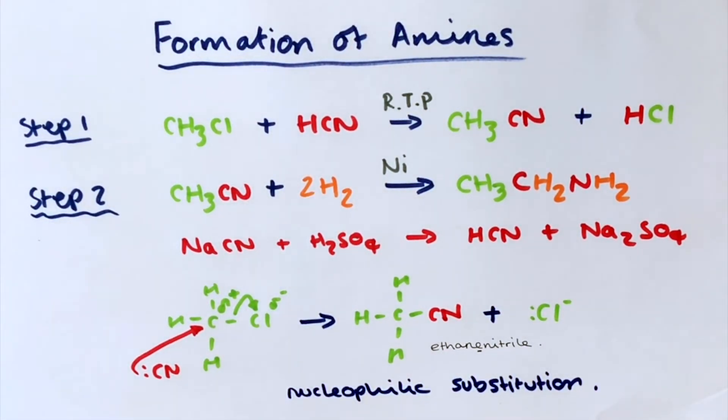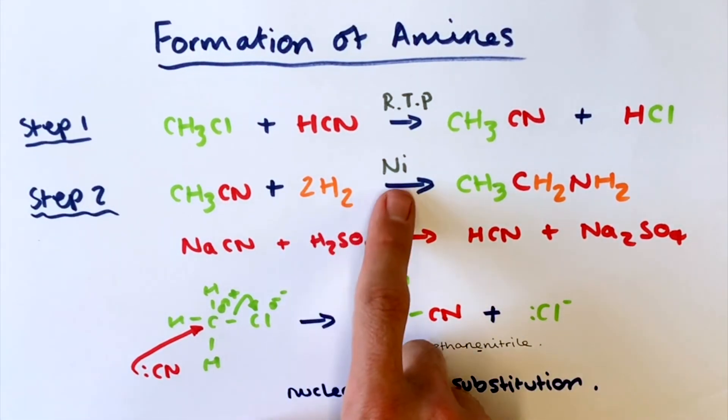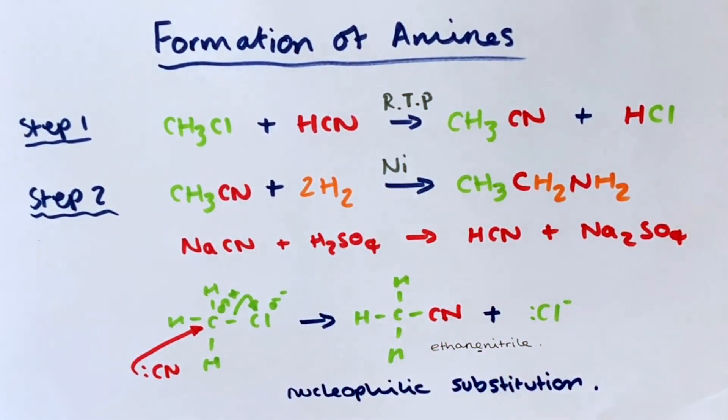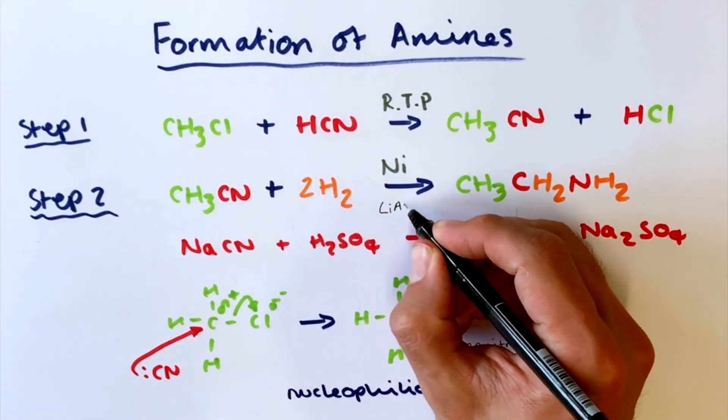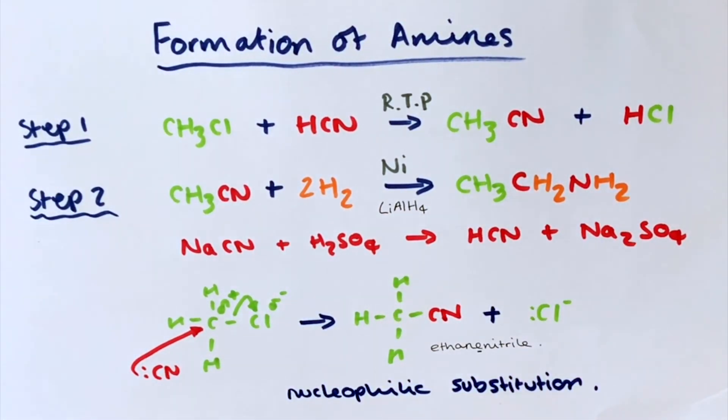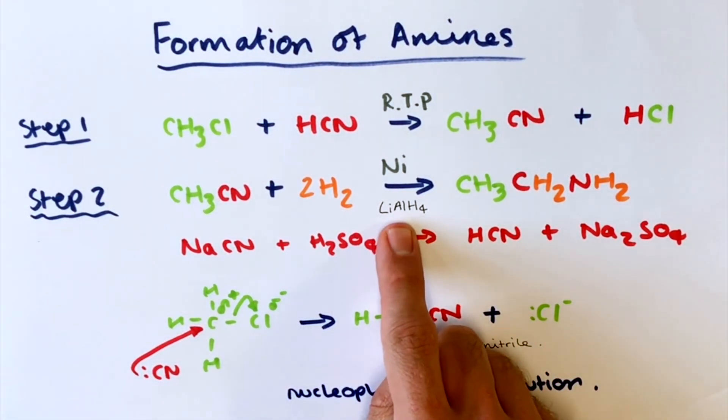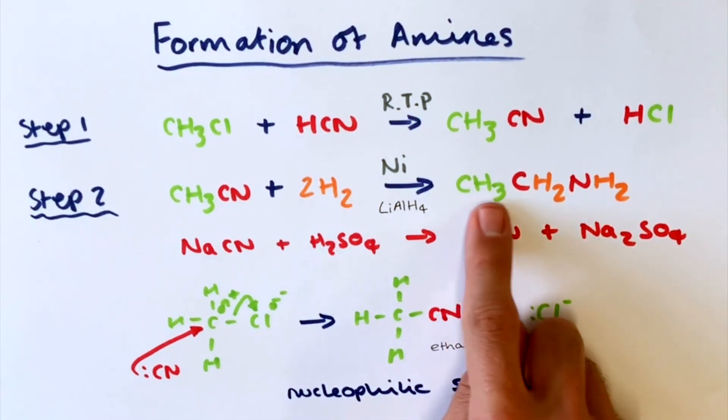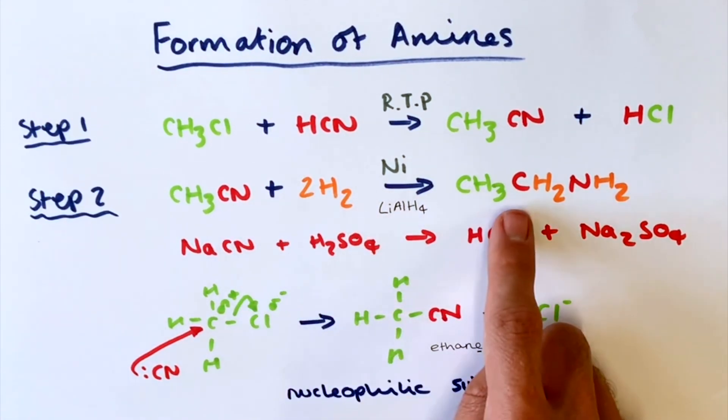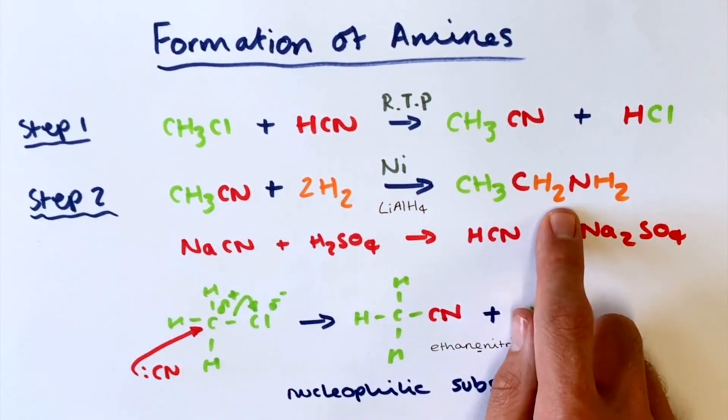So that's the two methods of forming amines, both from halo alkanes. One is a single step synthesis method using ammonia, the second is a two step synthesis process, first of all using hydrogen cyanide, followed by the reduction with a nickel catalyst and hydrogen. There is another thing that you could use in this reaction here. So instead of using a nickel catalyst and hydrogen, we could use a strong reducing agent. This particular one here is lithium tetrahydroaluminate. Don't need to remember that name, but this is just a strong reducing agent which has the same effect, and is also going to add the hydrogens in to our nitrile here to make our amine.